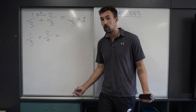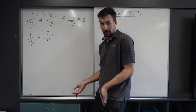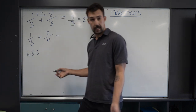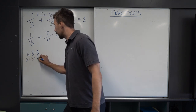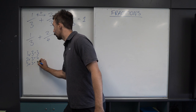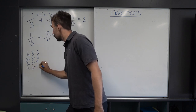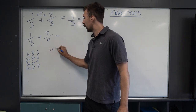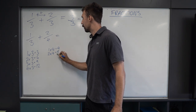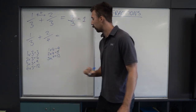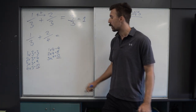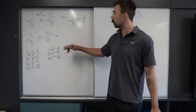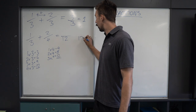What number do both of these denominators multiply to that is the same? Let's go through our multiples of 3: 1×3=3, 2×3=6, 3×3=9, 4×3=12. Now the 4s: 1×4=4, 2×4=8, 3×4=12. We can see that both give us 12 — that is the lowest common multiple. So we convert 1 over 3 plus 2 over 4 to over 12 and over 12.